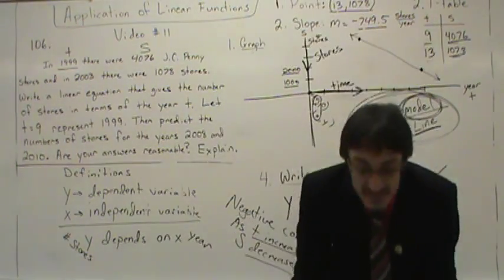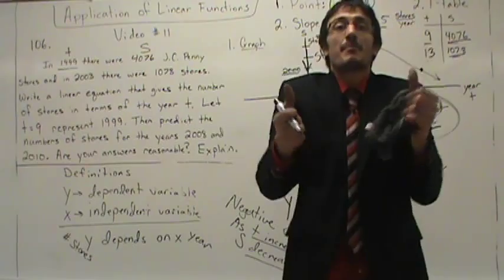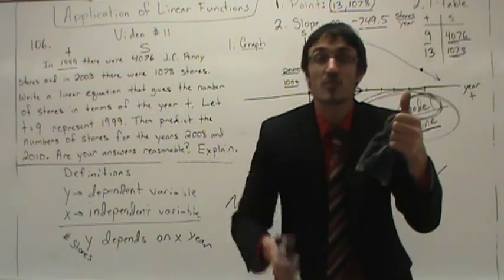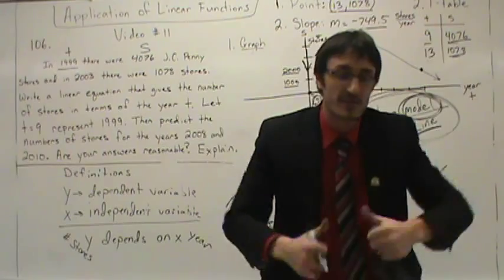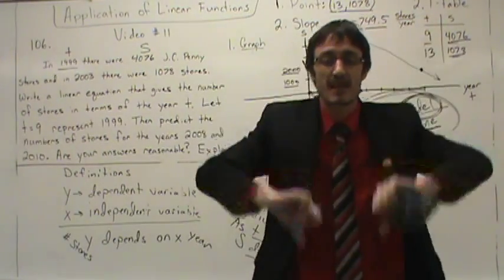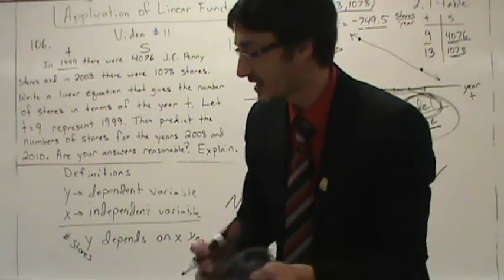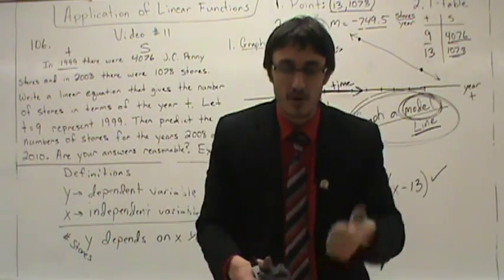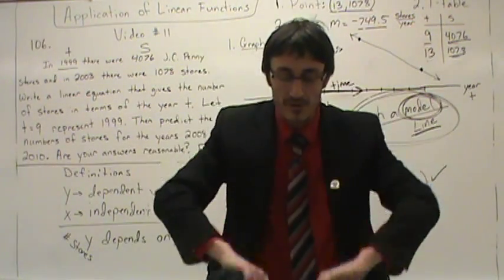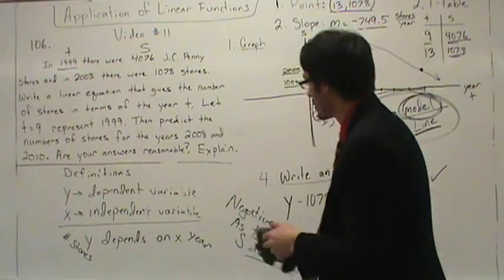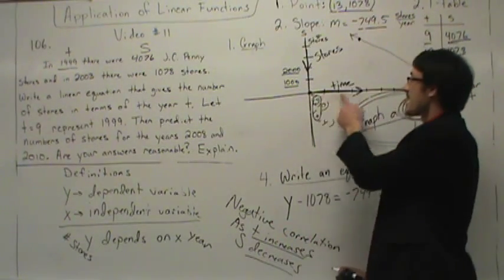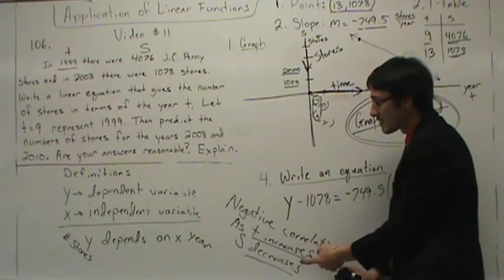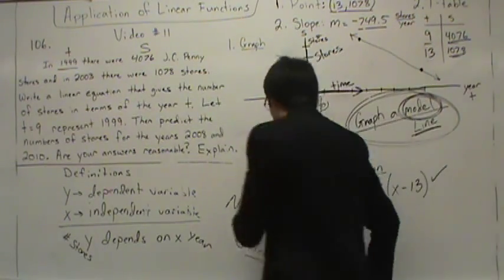As time is increasing, what is happening to the number of stores? The number of stores are decreasing. As x increases, y decreases — if they're doing opposite things, this is negative correlation. If they're doing the same thing — both going up or both going down — that's positive correlation. Notice here they are doing opposite things: as time increases, numbers of stores decrease. This is an example of negative correlation.